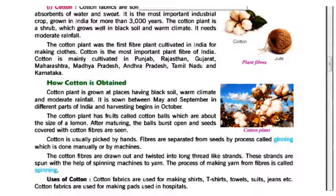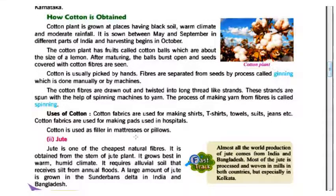The cotton is usually picked by hand. Fibers are separated from seeds by a process called ginning, which is done manually or by machine. The cotton fibers are then drawn out and twisted into long thread-like strands, which are spun into yarn. The process of making yarn from fiber is called spinning.